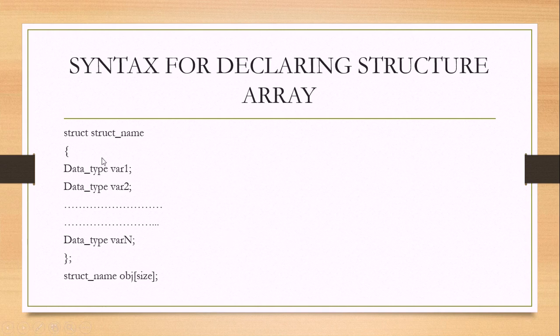Now let's see the syntax for declaring a structure array. First, we write the 'struct' keyword, then the structure name. Inside curly braces we declare all the members of that structure, then close with a semicolon. In the main function, we create an array of structure by writing: structure name, then space, then the object/variable name followed by square brackets with the size.